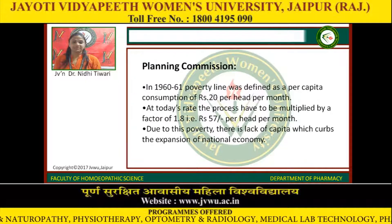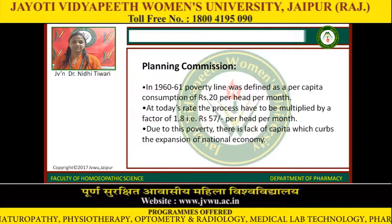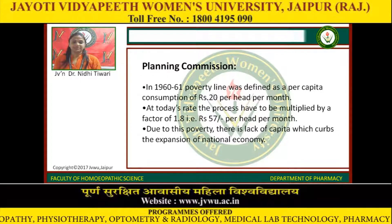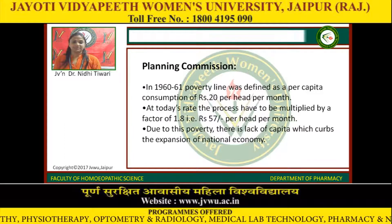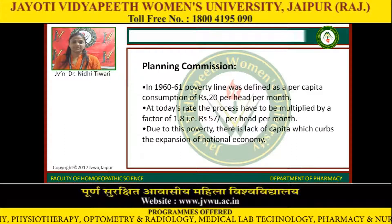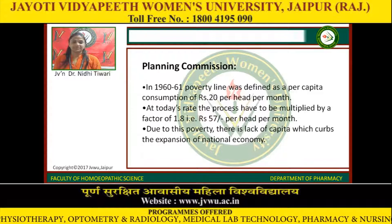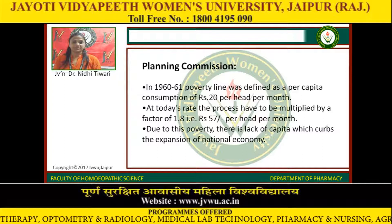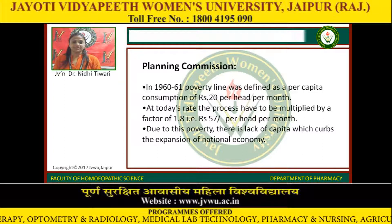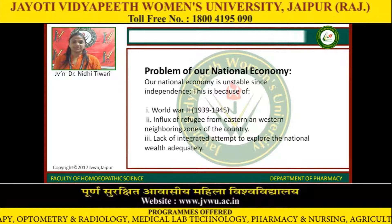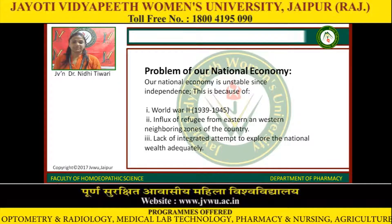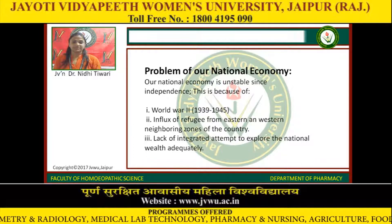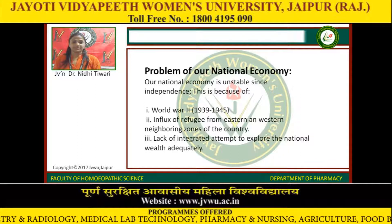The Planning Commission in 1960-61 defined the poverty line as a per capita consumption of Rs. 20 per head per month. At today's rate, this has to be multiplied by a factor of 1.8, that is Rs. 57 per head per month. Due to this poverty, there is a lack of capital which curbs the expansion of national economy. Our national economy has been unstable since independence in 1947.